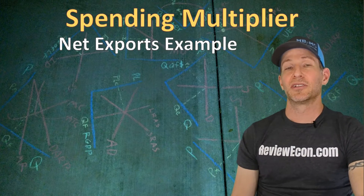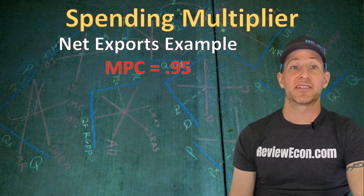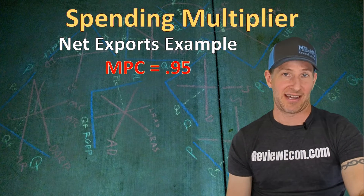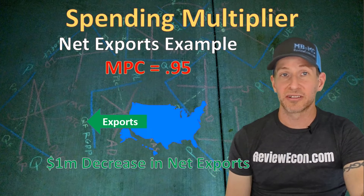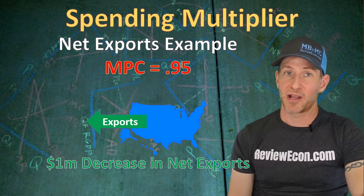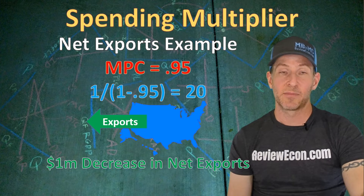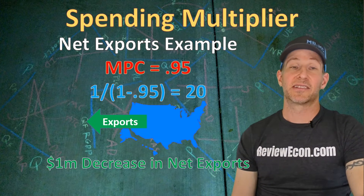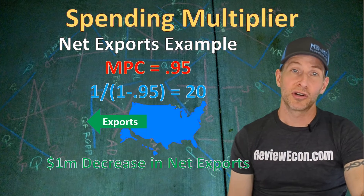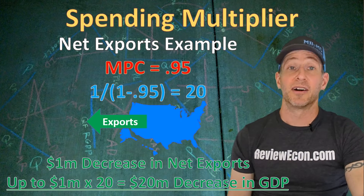For our last example, we're going to look at net export changes. Let's say the country has a marginal propensity to consume of 0.95 and there's a $1 million decrease in net exports. The spending multiplier will be 1 divided by (1 minus the MPC), which is 20. That means the $1 million decrease in net exports could decrease gross domestic product by a maximum of $20 million.